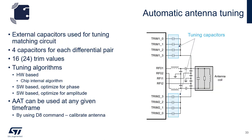Automatic antenna tuning is achieved by using external capacitors that can be switched in parallel to the parallel capacitor of the matching circuit. There are four capacitors for each differential pair, and these capacitors are binary weighted, giving you 16 trim values for each RFO. There are three tuning algorithms available: one is hardware-based that's internal to the chip, and there are also two software-based — one optimized for phase and another optimized for amplitude. AAT can be used during any time of the polling sequence simply by using the D8 command to calibrate the antenna.